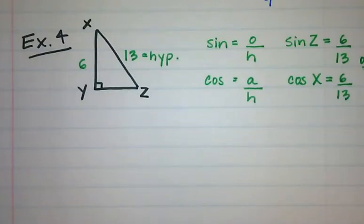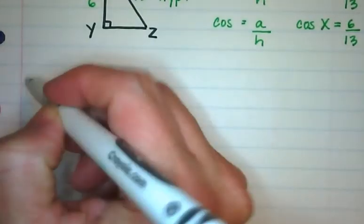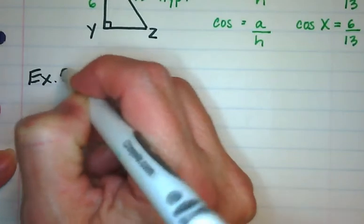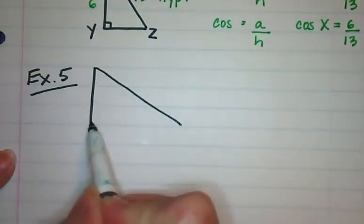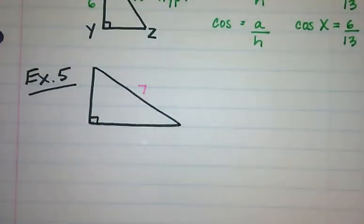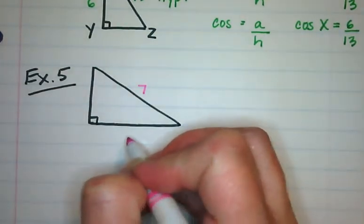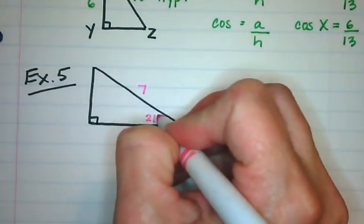Continuing on, we are going to start moving into some examples where we know what the angle is and we're looking for an additional side value. Example number 5: we are given a triangle where this side is 7, this side we will call x, and this angle right here is 21 degrees.